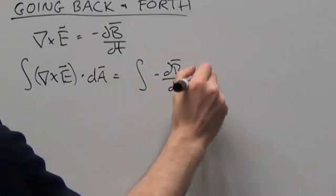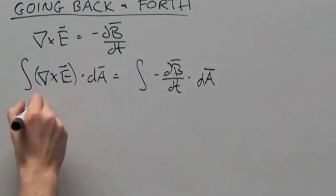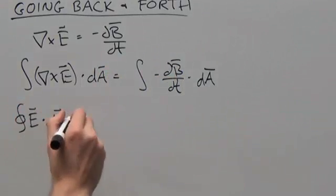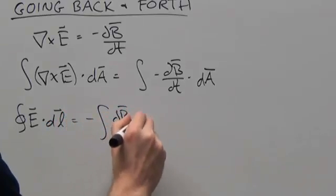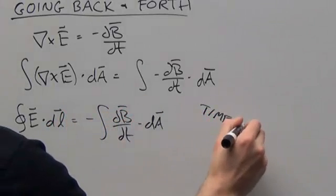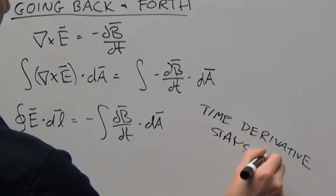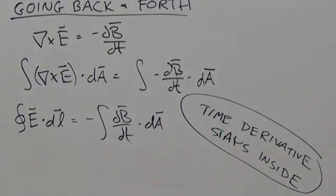Integrate both sides over some 2D domain. Use Stokes' theorem to change the left-hand side into a 1D path integral, and you're done. Just don't pull that time derivative out of the right-hand side unless you're really sure that your domain isn't changing over time.